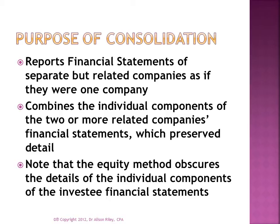The consolidation process combines the individual statements of two or more related companies, which preserves details of the individual statements. Note that the parent continues to account for the subsidiary in its accounting records on a daily basis using the equity method. If the parent were to also report the activities of the subsidiary using the equity method, only one line of information would appear on the parent's balance sheet regarding its subsidiary — namely the investment in subsidiary account. Similarly, only one line on the parent income statement would describe the results of operations of the subsidiary, namely the equity in the income of subsidiary account. This one-line accounting for the subsidiary obscures the detail of the subsidiary's accounts and under GAAP is considered insufficient presentation for a controlled group.